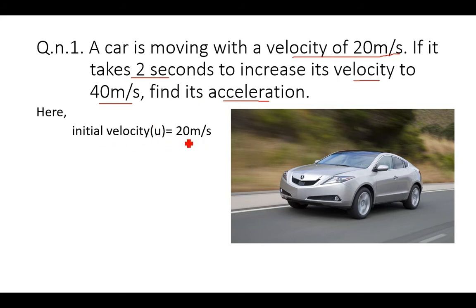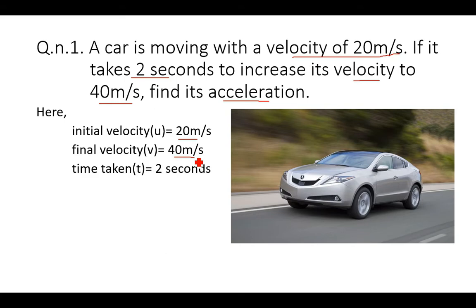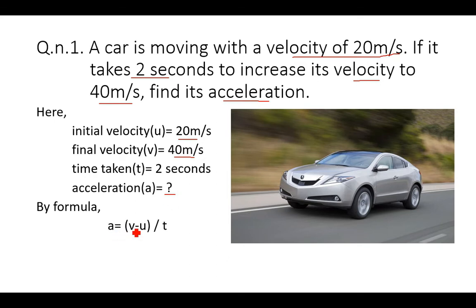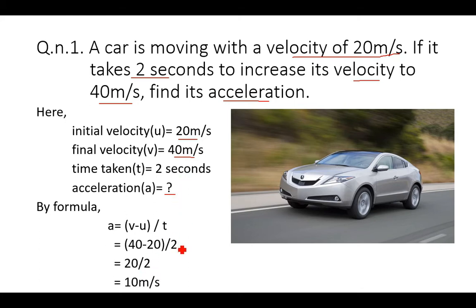Initial velocity u = 20 m/s, final velocity v = 40 m/s, and time taken t = 2 seconds. By formula, acceleration = (final velocity − initial velocity) / time, that is a = (v − u) / t. Keeping the values: (40 − 20) / 2 = 20 / 2 = 10 meters per second squared. That is our acceleration.